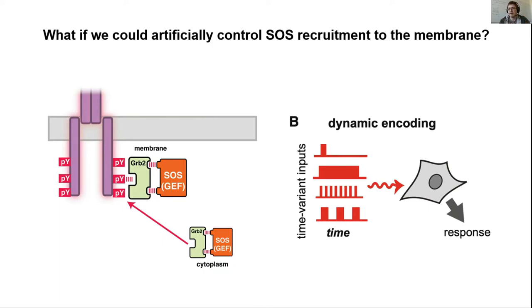It's been hard to study that systematically because we've been constrained by the types of dynamics that different signaling ligands produce. For example, we saw that NGF and EGF produce different transient versus sustained signals inside the cell. So what if we could artificially control SOS recruitment to the plasma membrane? If this were possible, we could basically mimic what happens when a receptor binds ligand and activates SOS, but we would control how much gets there and when — delivering short pulses of GEF activity, long recruitment periods, or different oscillations. Then we could ask: if you give cells different patterns of stimulation, what do the cells do?